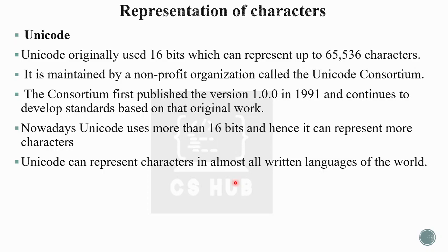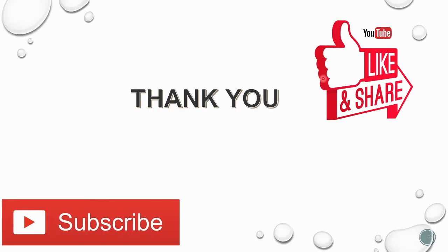To summarize, we discussed three character representations: first, ASCII and its extended version ASCII-8; then EBCDIC for IBM machines; then ISCII; and finally Unicode, which is the most widely accepted. Unicode uses 16 bits and can represent up to 65,536 different characters. It was developed by the Unicode Consortium. Hope the concept is clear — thank you.